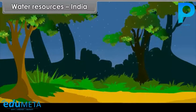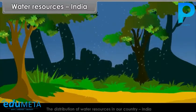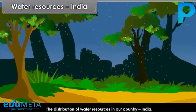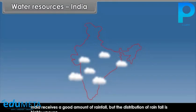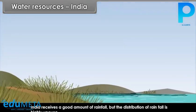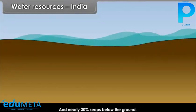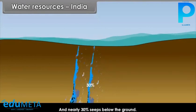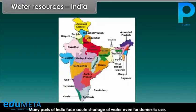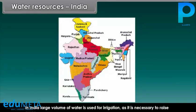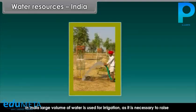Water Resources: India. Here we will study the distribution of water resources in our country India. India receives a good amount of rainfall, but the distribution of rainfall is highly uneven. About 20% of the rain water is lost by evaporation and nearly 30% seeps below the ground. Many parts of India face acute shortage of water even for domestic use. In India, a large volume of water is used for irrigation as it is necessary to raise crops.